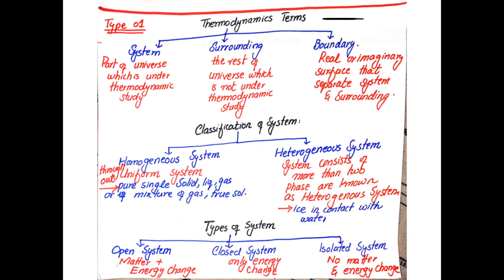Now, there are certain terms useful for understanding thermodynamics. The first set of terms is: system, surrounding, and boundary. A system is the area or apparatus that we keep under observation. We can say that the part of the universe which is under thermodynamic study is known as a system.